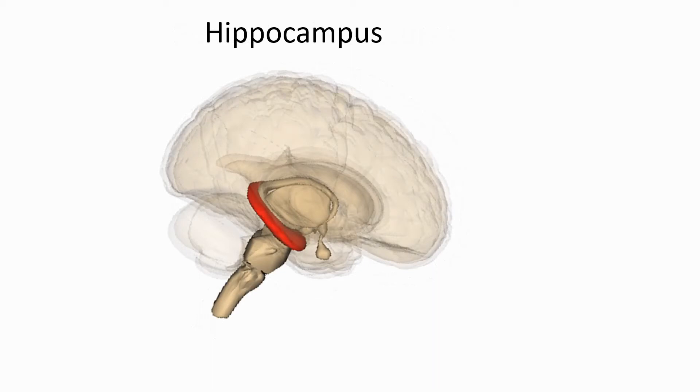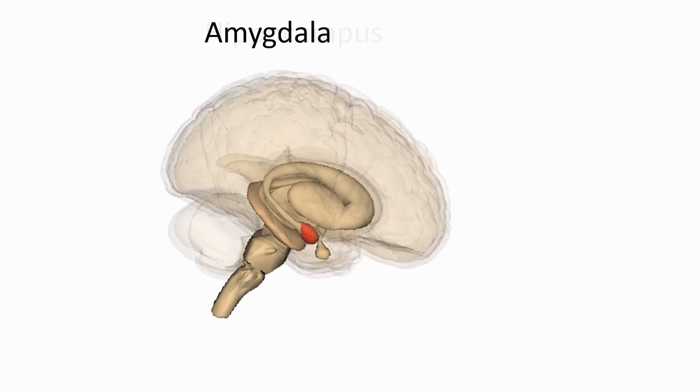Close to the hippocampus is the amygdala, which is an important centre in the brain for processing emotions. Its closeness to the hippocampus allows for the efficient emotional labelling of memories.